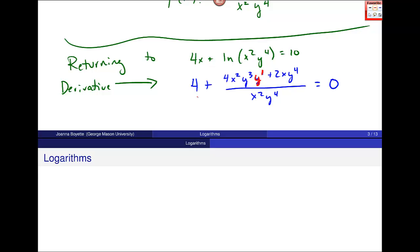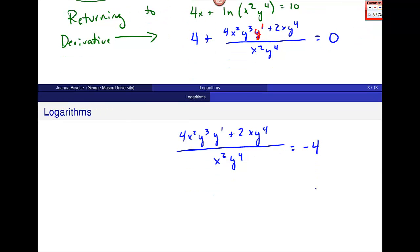That is most of the heavy lifting. I still have to solve for that piece right there in red, the y prime. I'll start by moving this 4 to the other side. This is a lot of algebra, and you want to go slowly and intentionally. Now the next thing I probably want to do is multiply both sides by this denominator. It'll cancel on this side, and I'll get it over here. So I get 4x²y³y' plus 2xy⁴ equals negative 4x²y⁴.